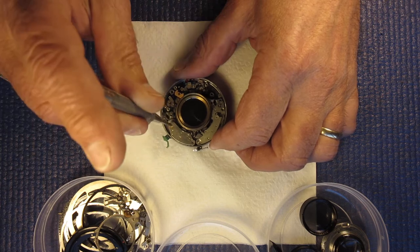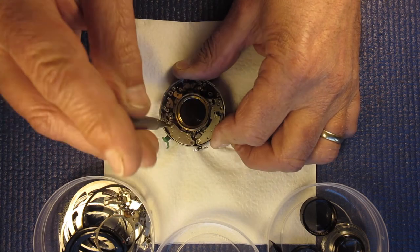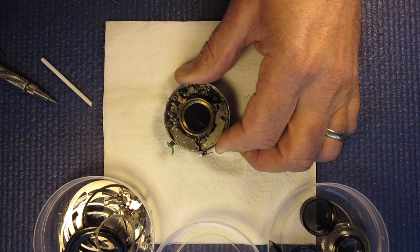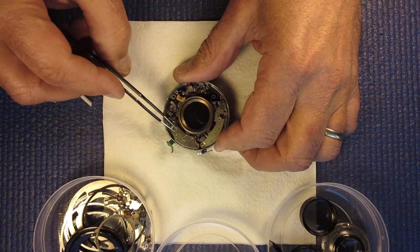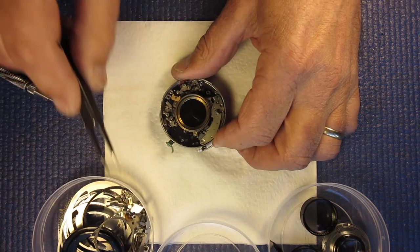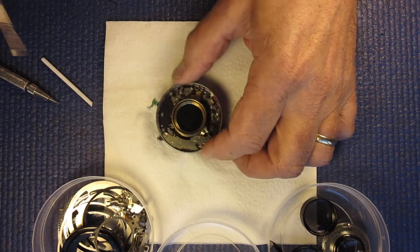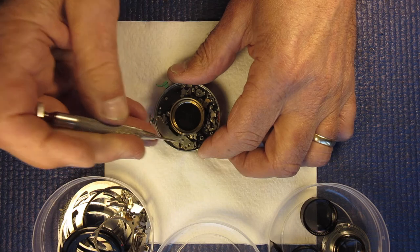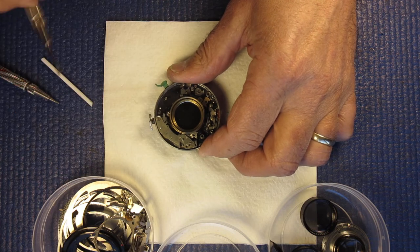This is the delay action or self timer. Held in with a single screw. This is the retard gear train. Held in with two screws.